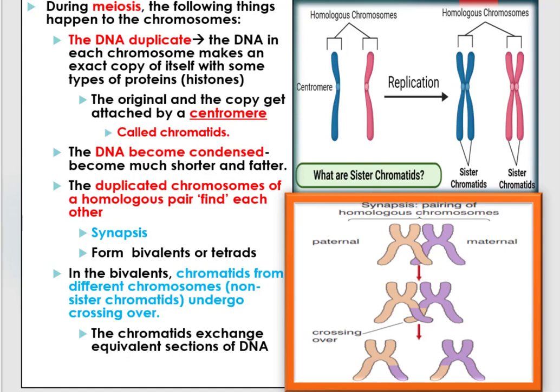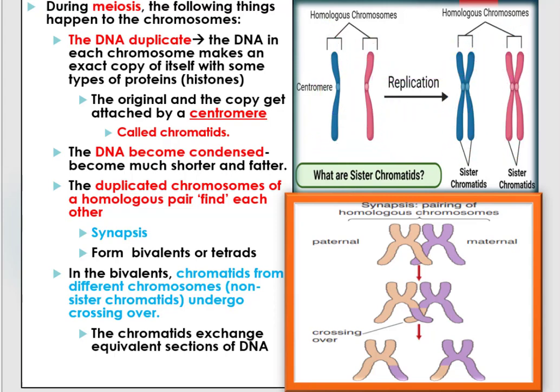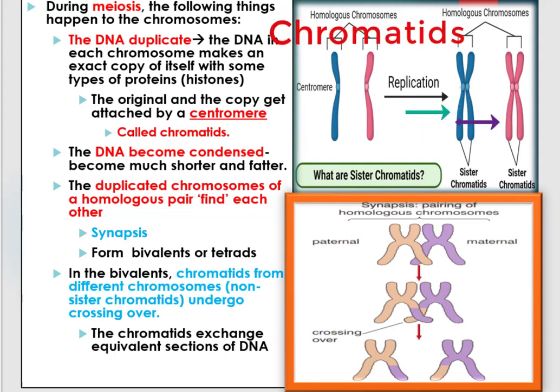During meiosis, the following things can happen to the chromosomes. The first is that the DNA duplicates — the DNA in each chromosome makes an exact copy of itself with the help of histone proteins. In this situation, the original and the copy get attached by a centromere. This original and copy of the DNA attached by a centromere are called chromatids.